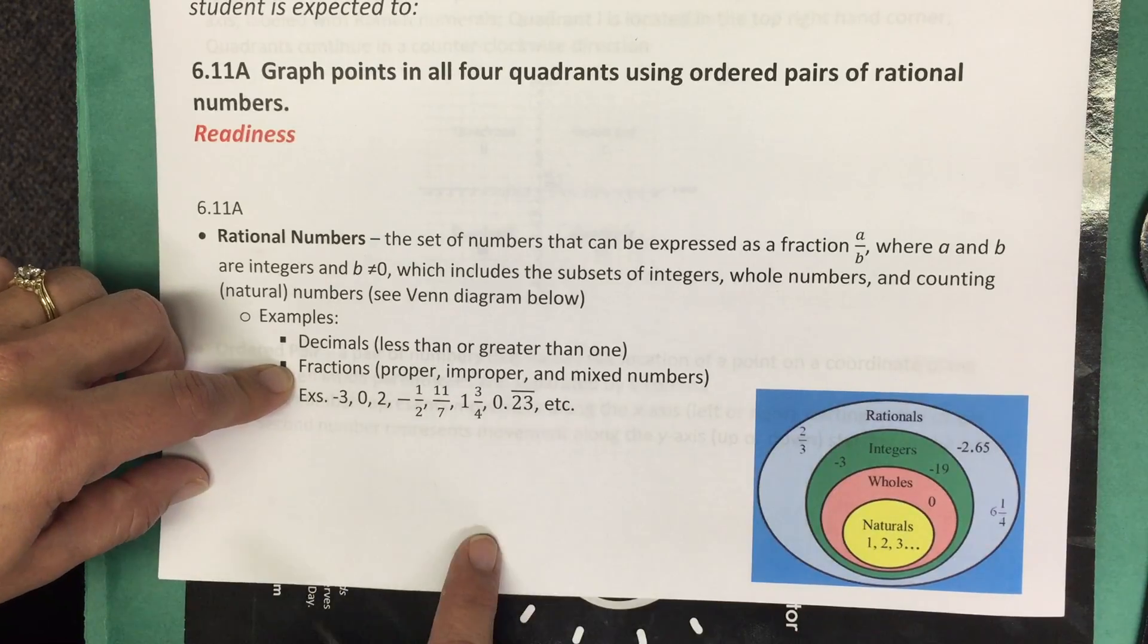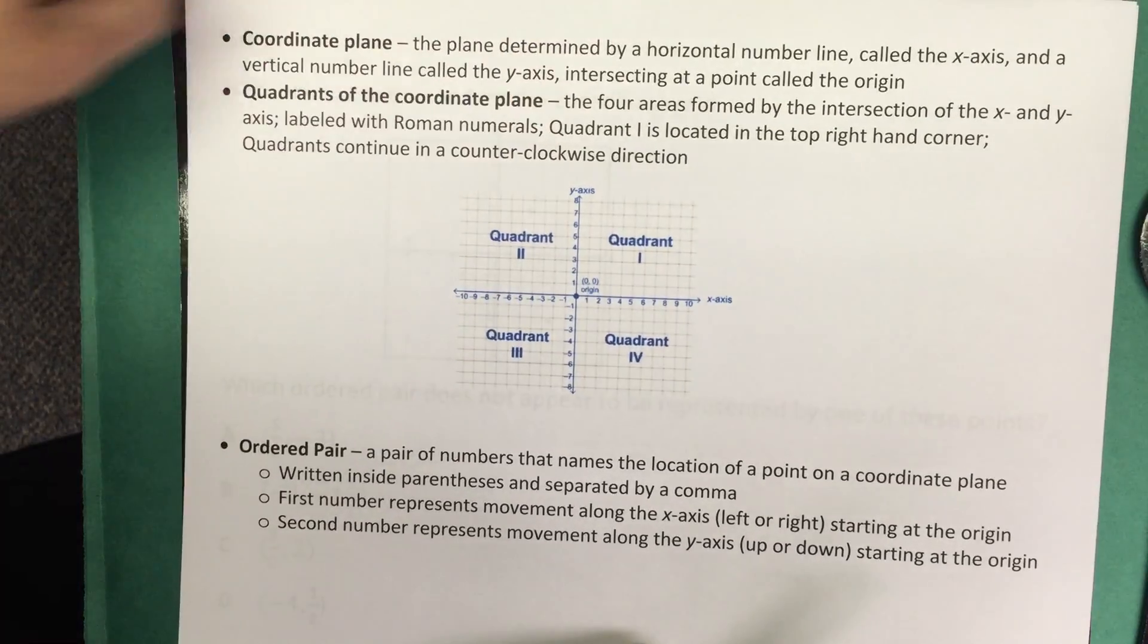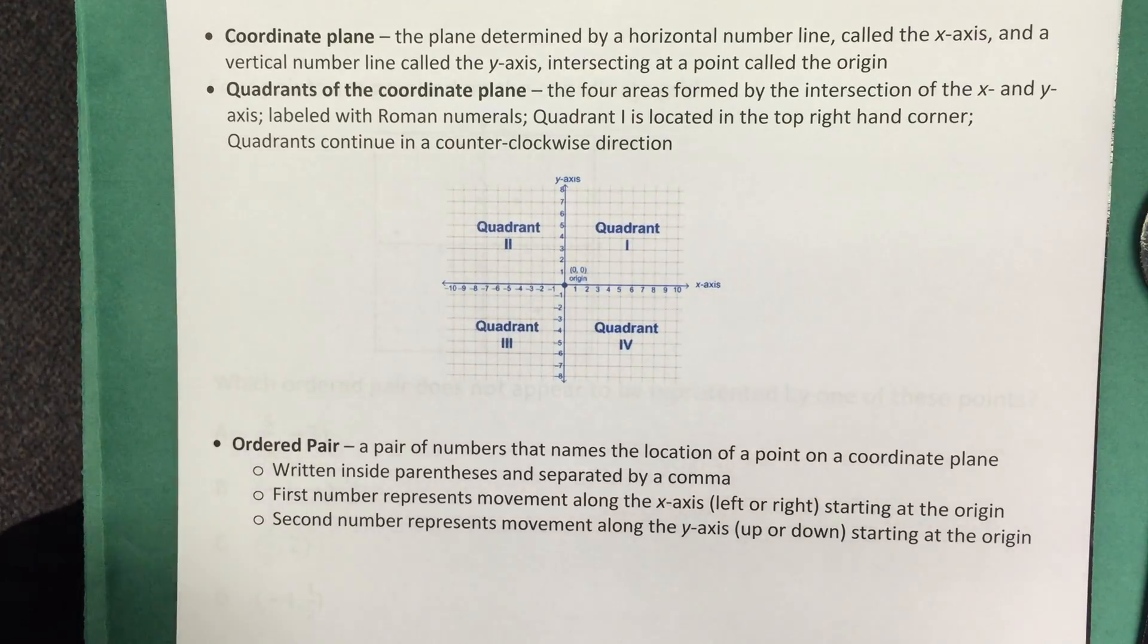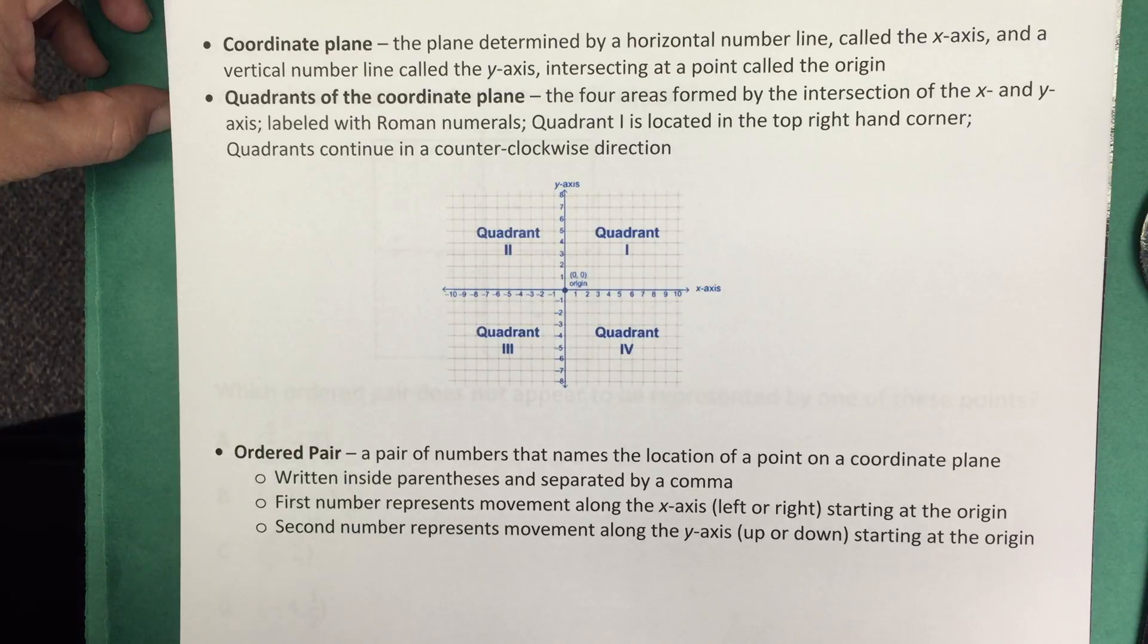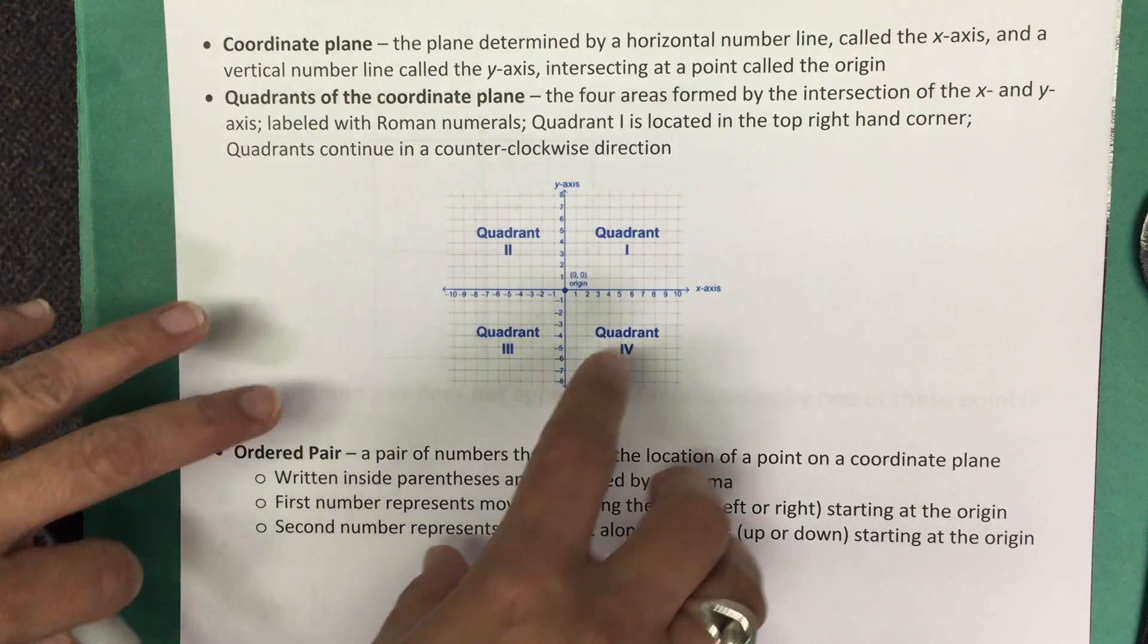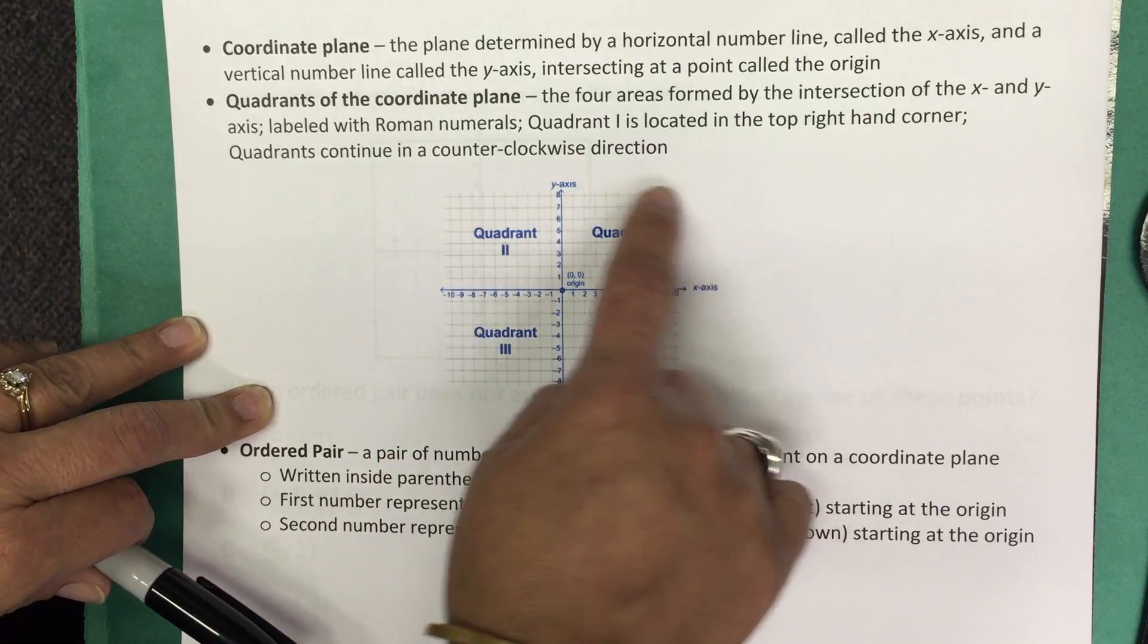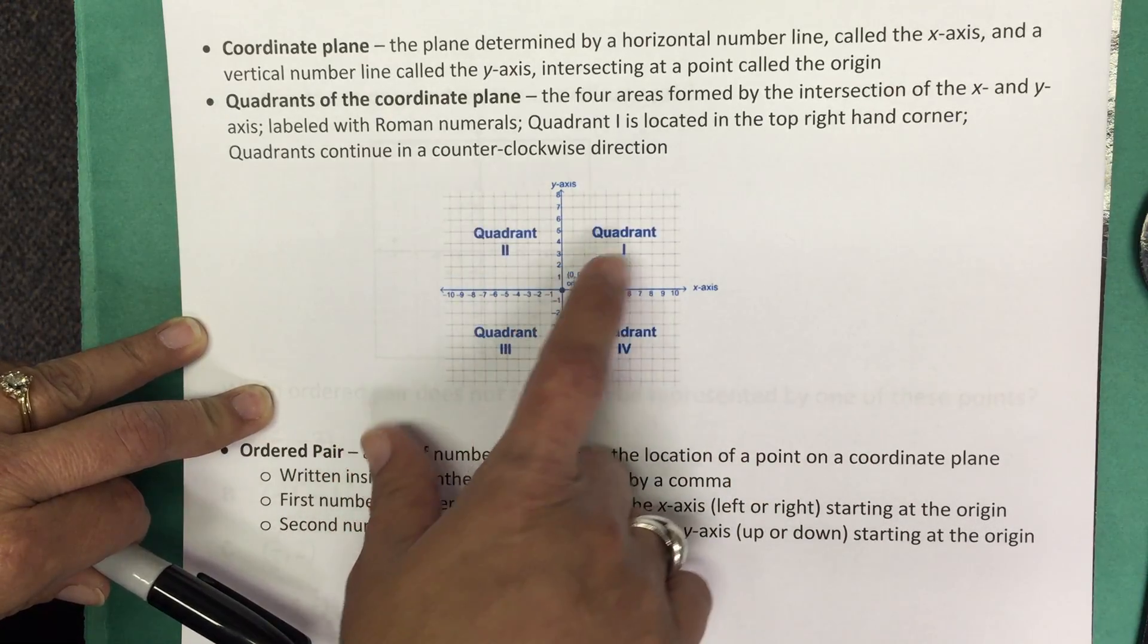Let's think about the definition of a coordinate plane. The coordinate plane is a plane determined by a horizontal number line called the x-axis and a vertical number line called the y-axis, which intersect at a point called the origin. Quadrants of the coordinate plane: there are four areas that are formed by the intersection of the x and the y-axis. The quadrants are labeled with Roman numerals. Quadrant I is located in the top right-hand corner, and then they continue numbering in a counterclockwise direction. So here's a picture of a coordinate plane. We have your x-axis, y-axis, the center is the origin, and we have all four quadrants labeled.